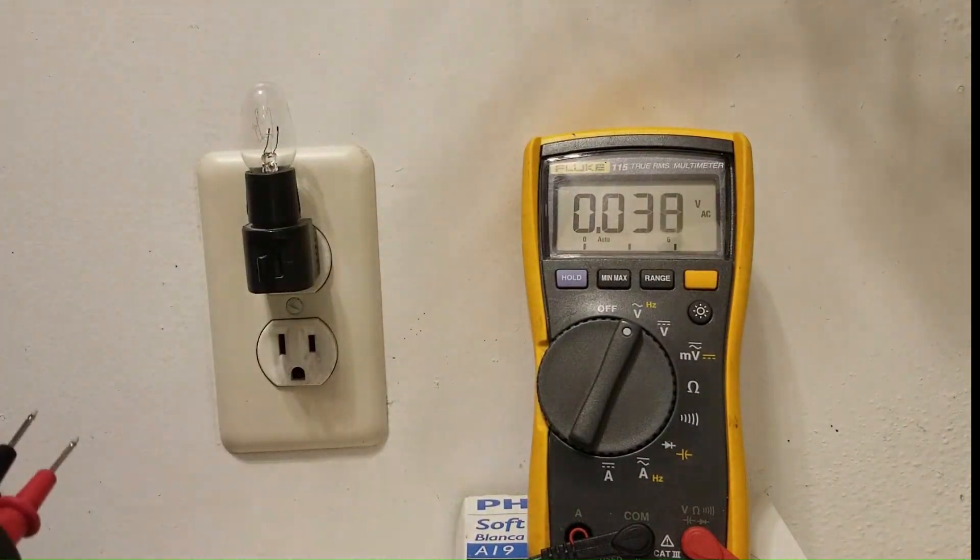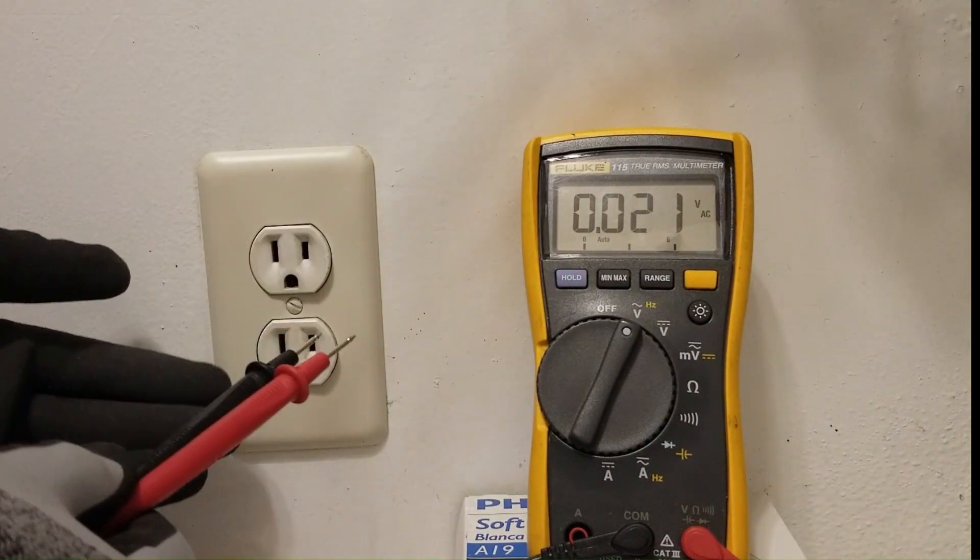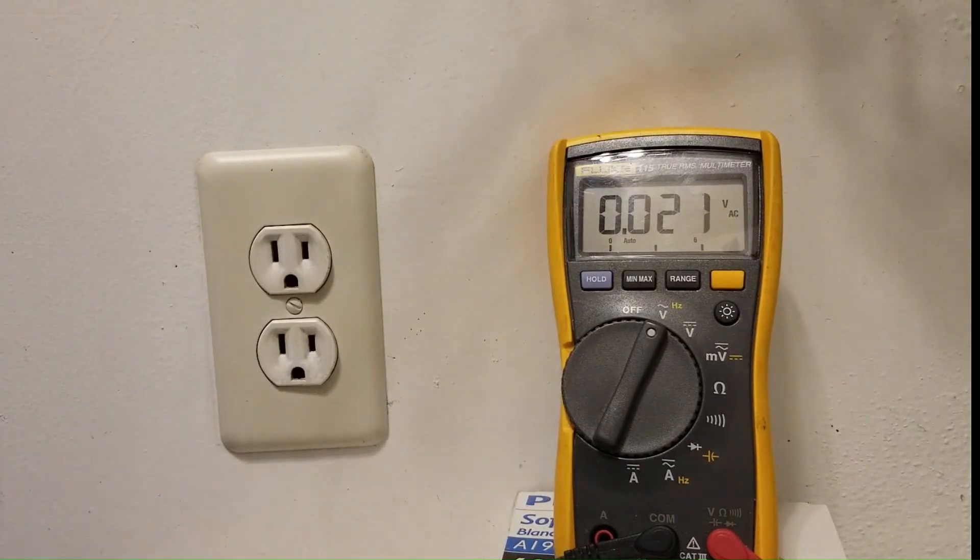It is compromised even though a couple of different measurements tells us the outlet is good. It's not actually a good outlet. So how can you tell if you only have a voltage pen?